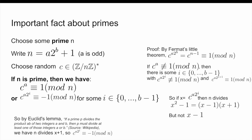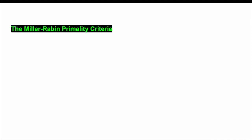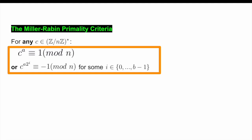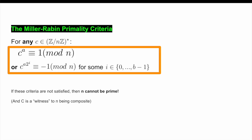What we have just shown is a special set of criteria that must hold as long as N is a prime number. We will call these the Miller-Rabin criteria for simplicity. Now, the important thing is that these criteria must hold for any choice of C in Z/NZ*. So, if we can find even one value for C for which this does not hold, then we know that N must be composite, and we can say that C is a witness to N being composite.